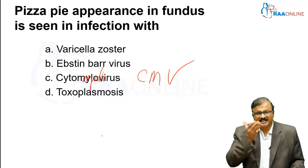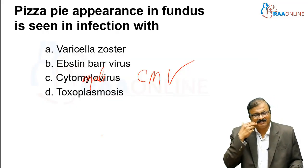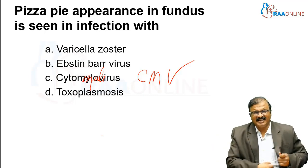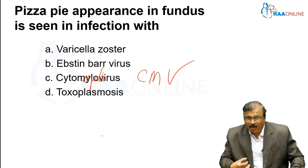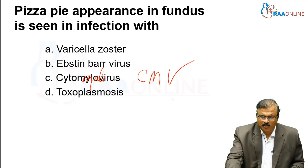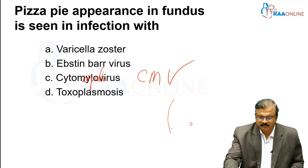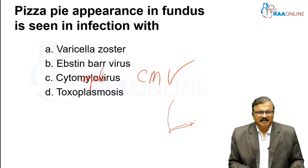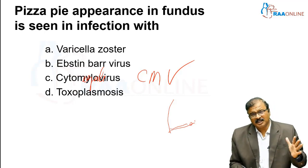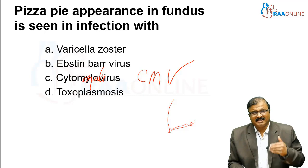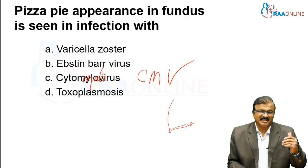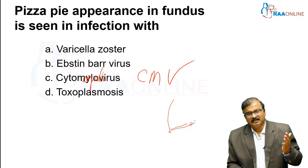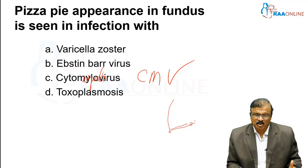What does Varicella Zoster present with? It is a herpetic lesion — vesicular lesions usually over a dermatome. It is limited to a dermatome; for example, T10 corresponds to the umbilicus. When do you suspect Varicella Zoster is associated with immunodeficiency? In immunodeficiency, the presentation of Varicella Zoster is different.